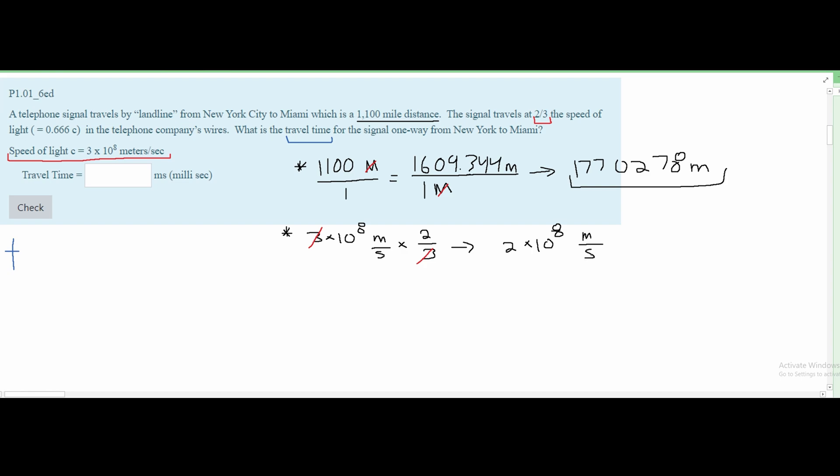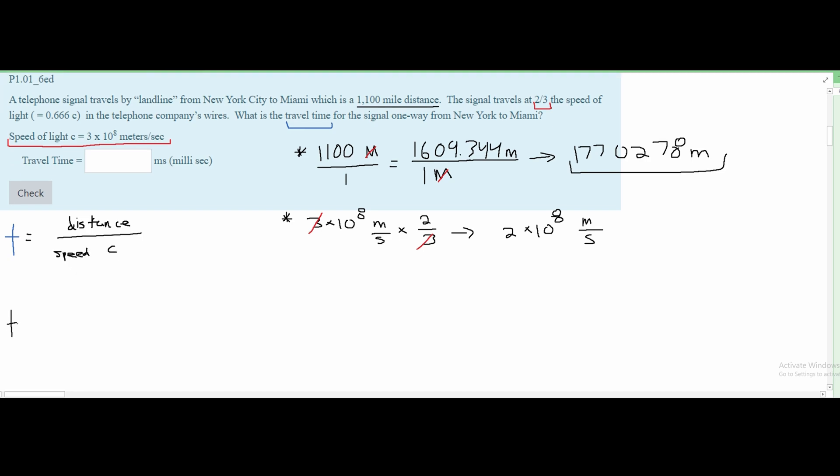Now to plug this in, we are going to plug our distance on top and our speed of light on the bottom. So t equals distance divided by speed. We can call this speed c for speed of light. Plugging in our values, we have t equals 1,770,278 meters divided by 2 × 10^8 meters per second. Since it's meters over second, we'll throw the s for seconds up top. We are going to cancel out our meters and then put this into a calculator.